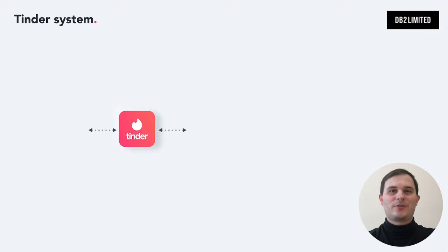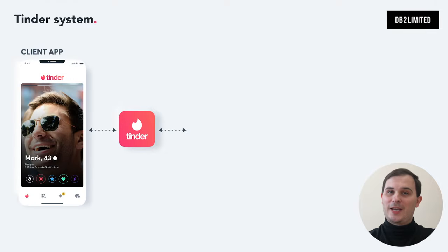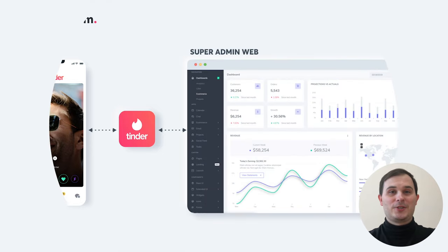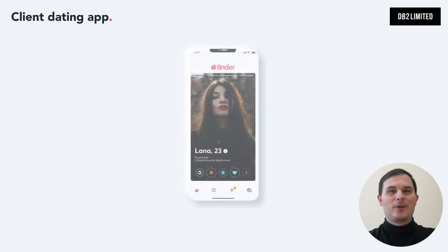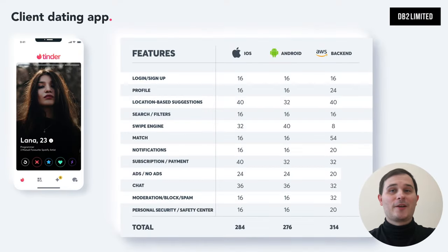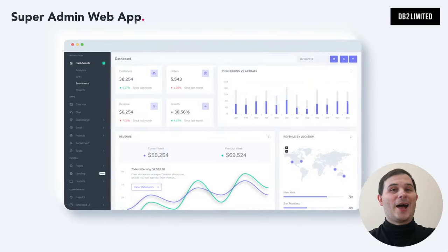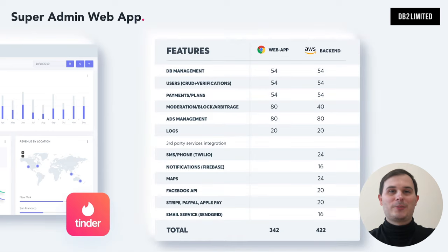There are two key elements to Tinder's business model. You have a client app for people to find a pair, and a web admin zone which allows you to manage users, payments, disputes, etc. Inside the client app you have functions like create profile, set up interests, find your pair, chats, swipes and so on. I've added these functions to a table so you can get an idea of the approximate hours your software engineers would need. The web admin zone allows you as a business owner to manage your users, payments, disputes and many more.